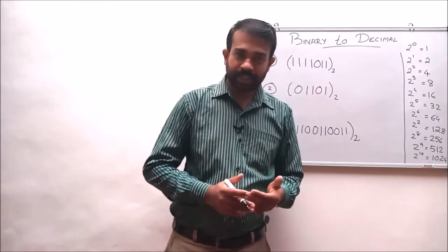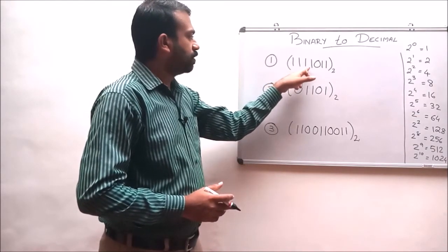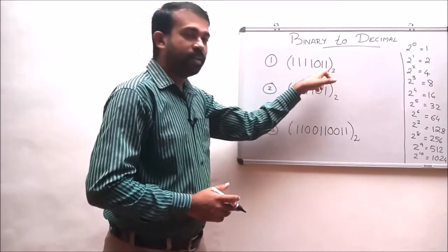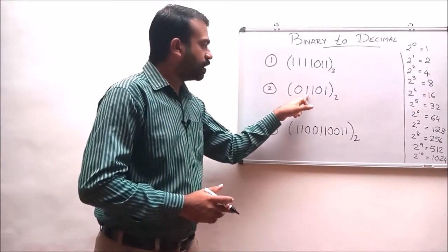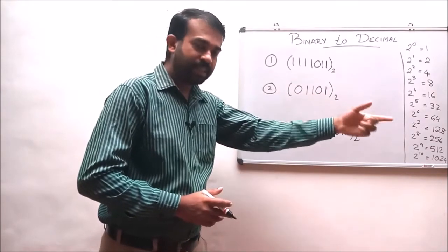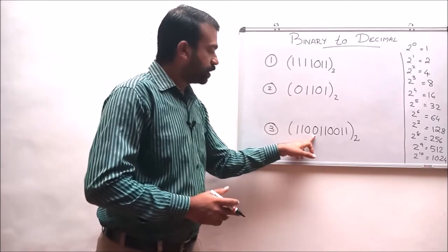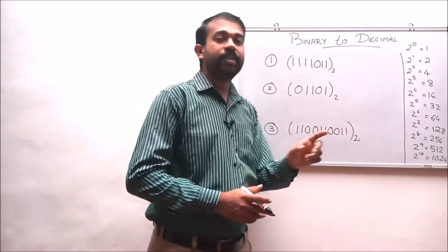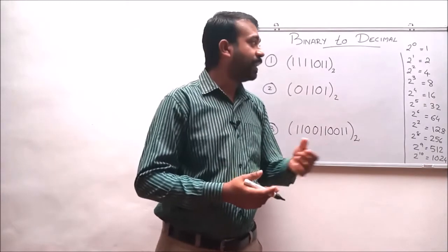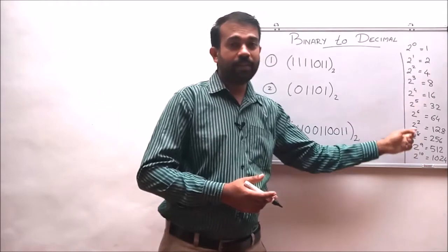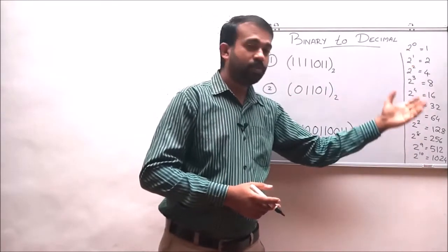Kindly go through these assignment questions. First: convert 1110011 to the base 2 into its decimal equivalent. Second: convert 01101 to the base 2 into its decimal equivalent. Third: convert 110011011 to the base 2 into its decimal equivalent. Before attempting these questions, kindly note down this power chart of 2, starting from 2 raised to 0 to 2 raised to 10.